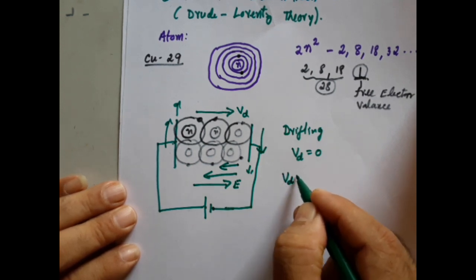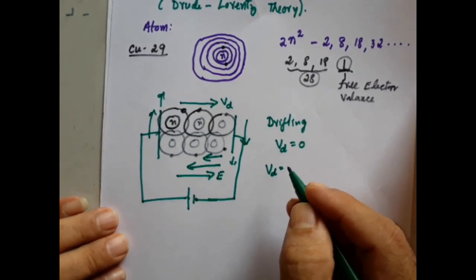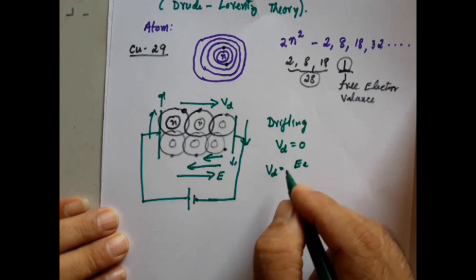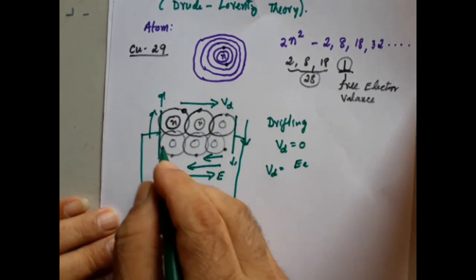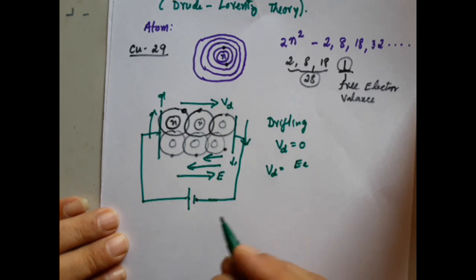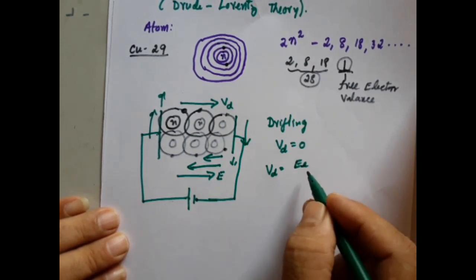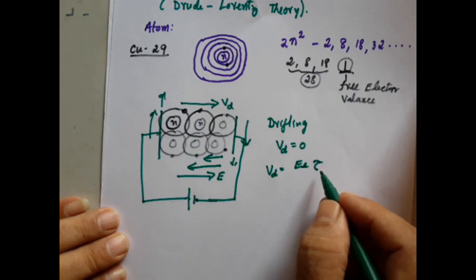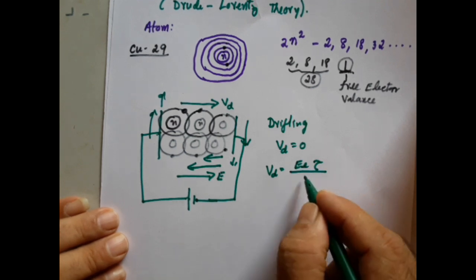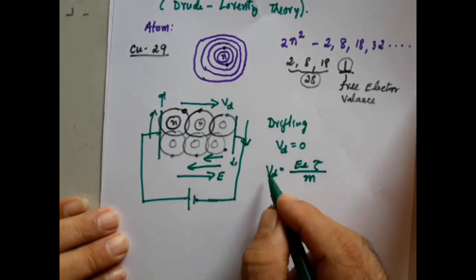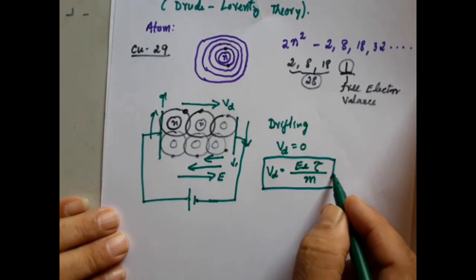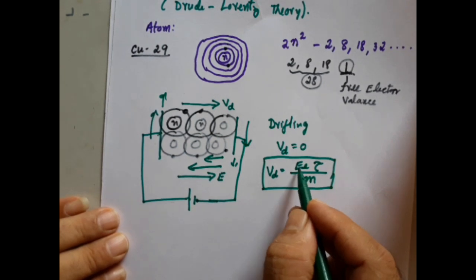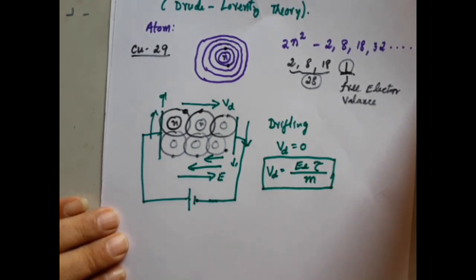Now, how much is the drift velocity? The drift velocity of each electron is proportional to the electric field applied between the two ends of the conductor. It depends on the electronic charge, and on one more factor called tau (τ), the relaxation time — the time between two successive collisions — and also depends on the mass. This is the equation for drift velocity of an electron when an electric field is applied. Drifting only occurs in the presence of an electric field.